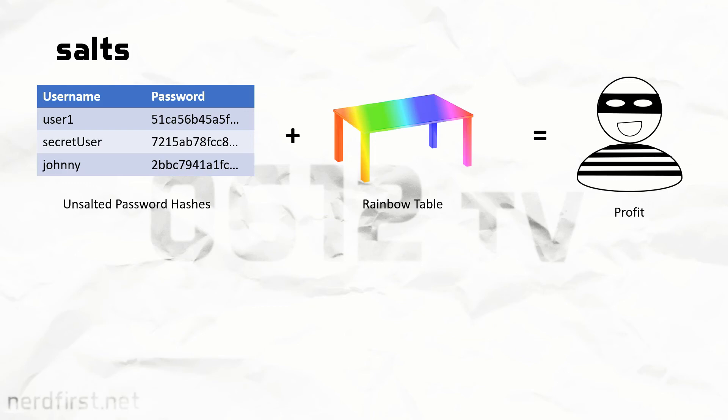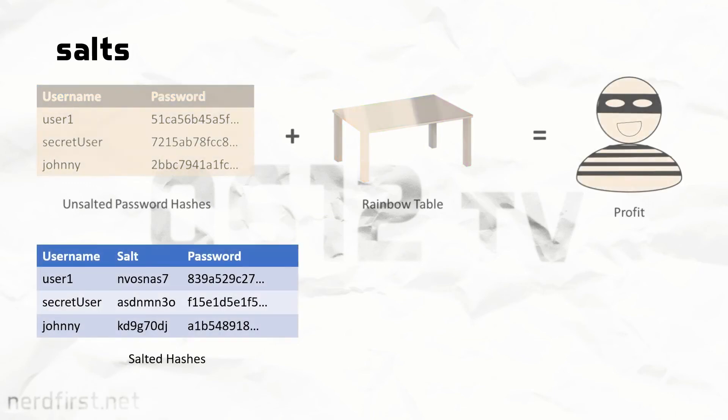However, things are different when we salt our passwords. Now, the salted hashes here represent things that are too complicated for our rainbow table. Even if it was a simple password, it is now combined with a complex salt to create a complex plain text to start off with. And what this means is, a rainbow table or lookup table probably doesn't have the correct entry to figure out what password this is.